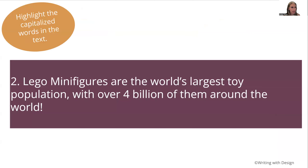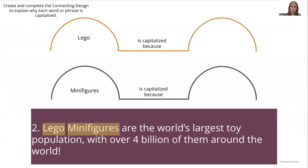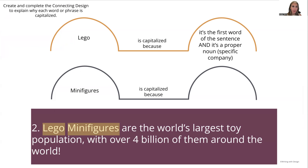Let's try one more for practice. Sentence two: 'Lego minifigures are the world's largest toy population with over 4 billion of them around the world.' The first word 'Lego' is capitalized — and it's both the first word of the sentence AND a proper noun. That's a neat piece of this activity: students realize sometimes words can fall into more than one category. It's a double reason to make sure it's capitalized. Together at the beginning of the sentence we also have 'minifigures,' and nothing else in the rest of the sentence is capitalized.